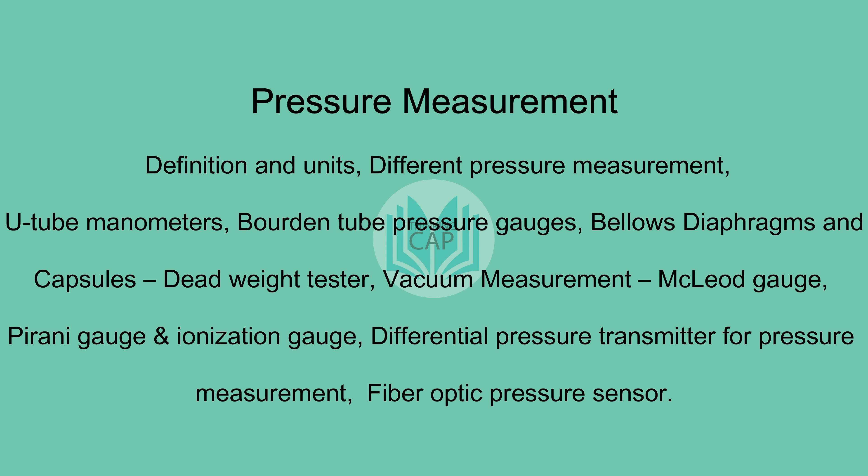Pressure measurement covers: definition and units, different pressure measurement types, U-tube manometers, Bourdon tube pressure gauges, bellows and capsules, dead weight tester, vacuum measurement, McLeod gauge, Pirani gauge, ionization gauge, differential pressure transmitter, and fiber optic pressure sensor.